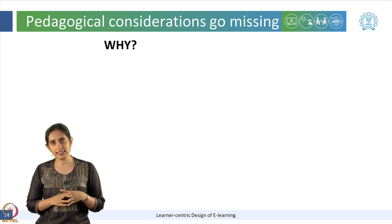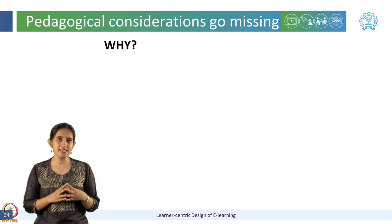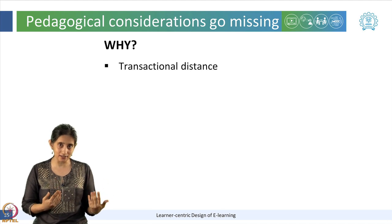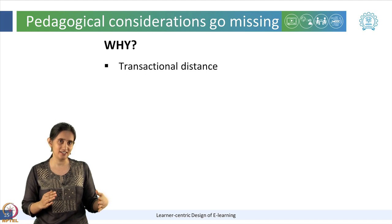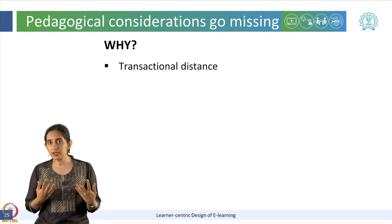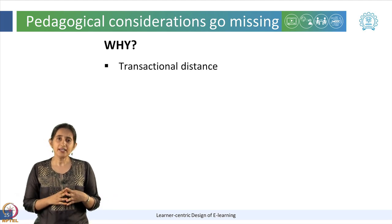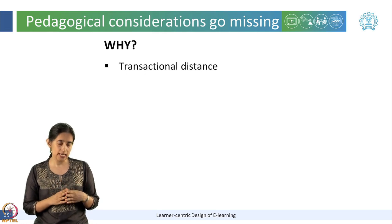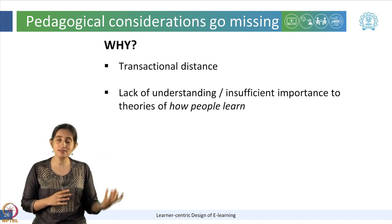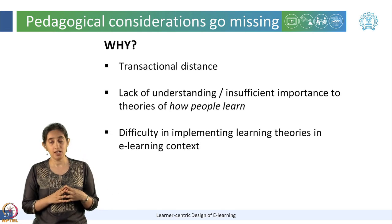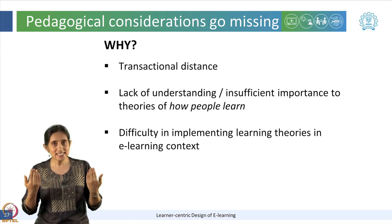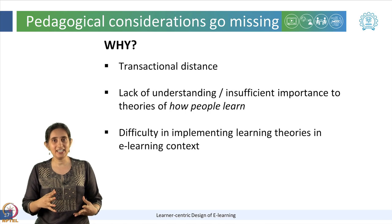What are some reasons for these pedagogical considerations to go missing? One major point is transactional distance, which comprises not only physical distance in terms of time and space in e-learning, but also the disconnect in communication — for example, what the instructor may have wanted to convey, what the expectations of the learners are, and what the learners finally take away. Another reason is the lack of knowledge of learning theories and how people learn, or perhaps the lack of importance a content creator gives to it. Even if an e-learning content designer knows about theories of how people learn, translating and operationalizing them into the e-learning setting comes with its own challenges.